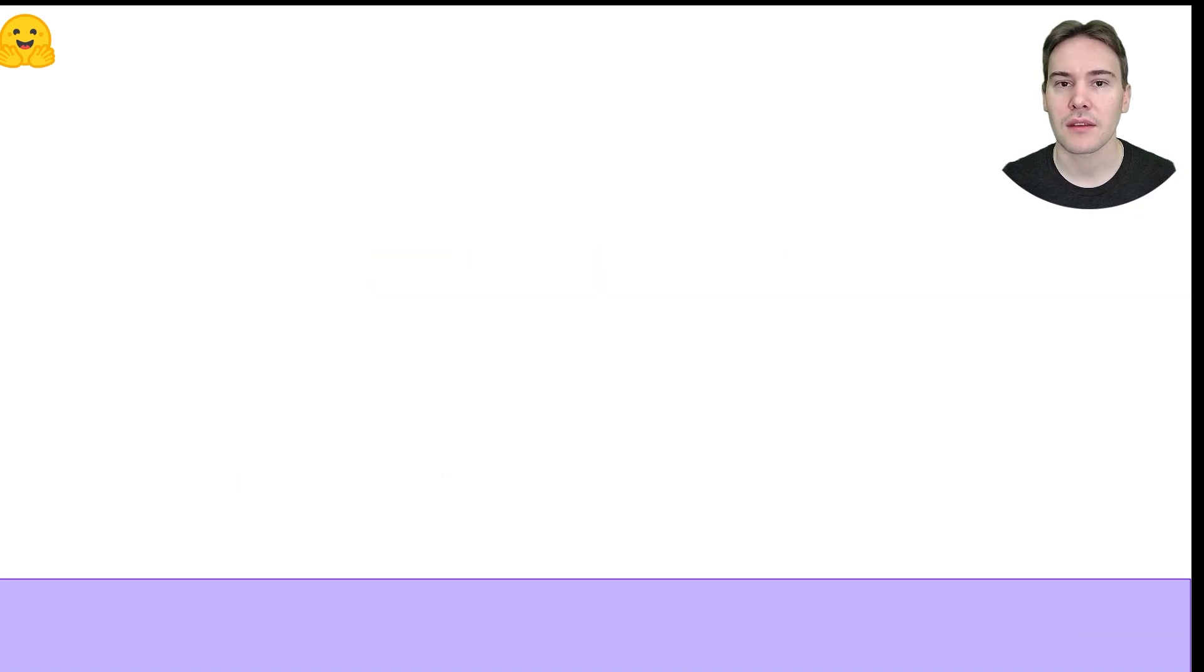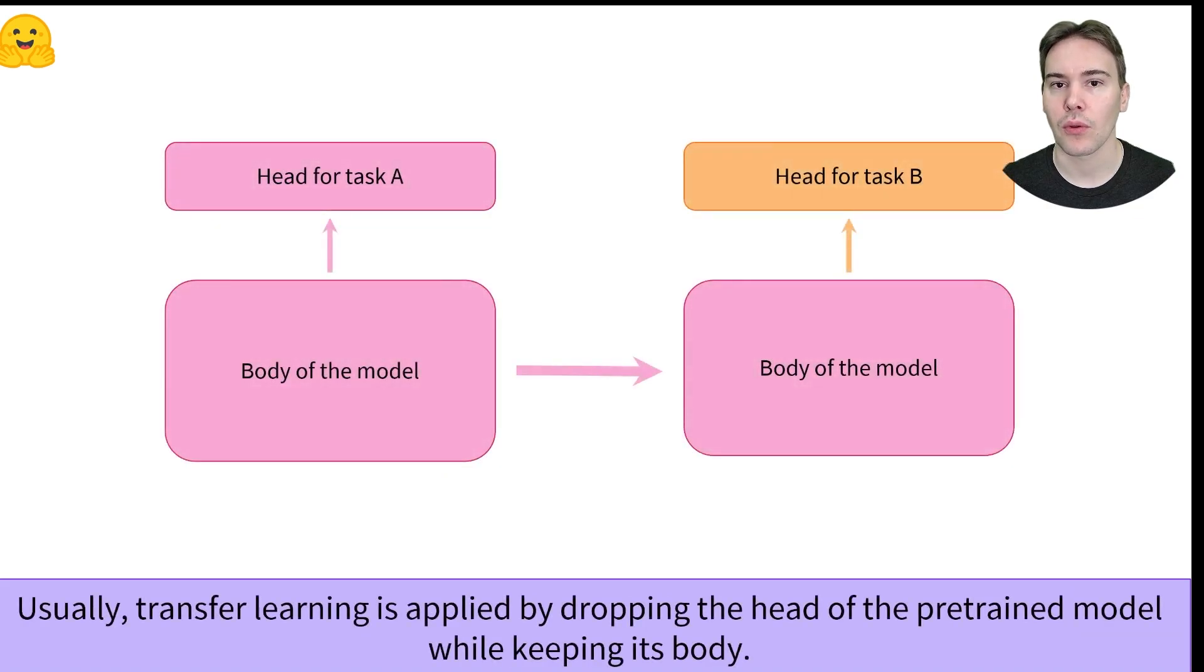In practice, transfer learning is applied on a given model by throwing away its head, that is, its last layers focused on the pre-training objective, and replacing it with a new randomly-initialized head suitable for the task at hand. For instance, when we fine-tuned a BERT model earlier, we removed the head that classified masked words and replaced it with a classifier with two outputs, since our task had two labels.